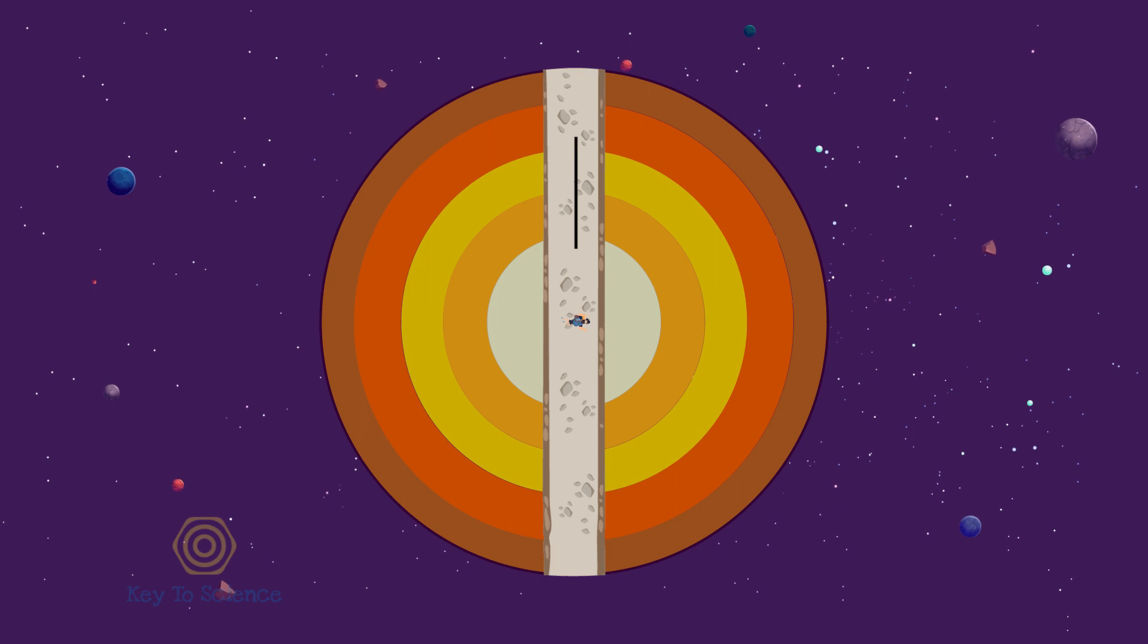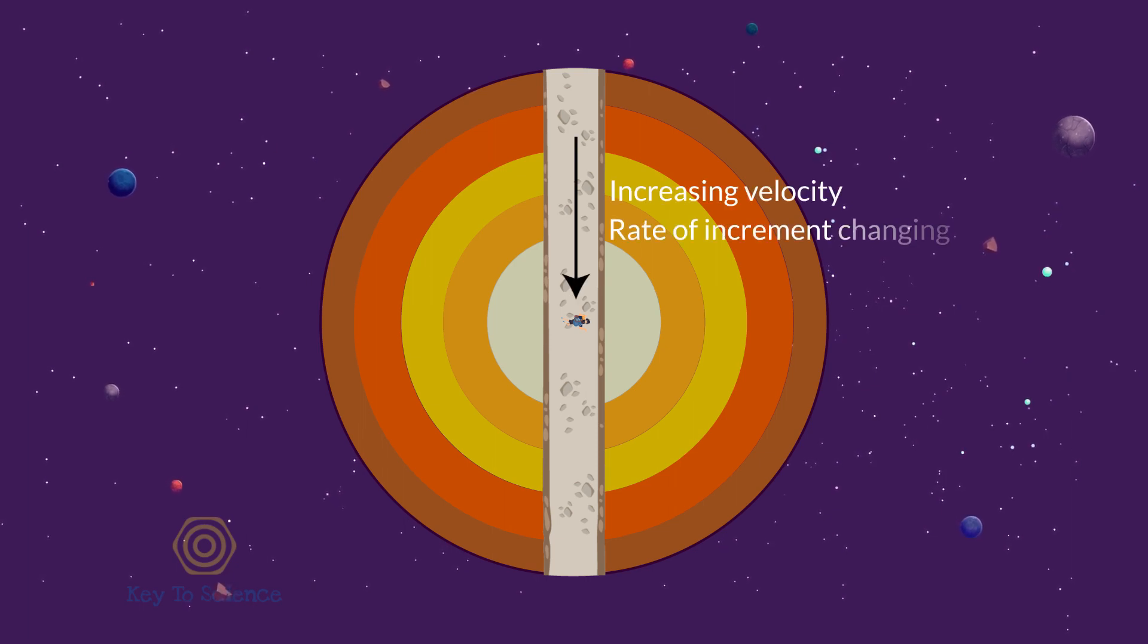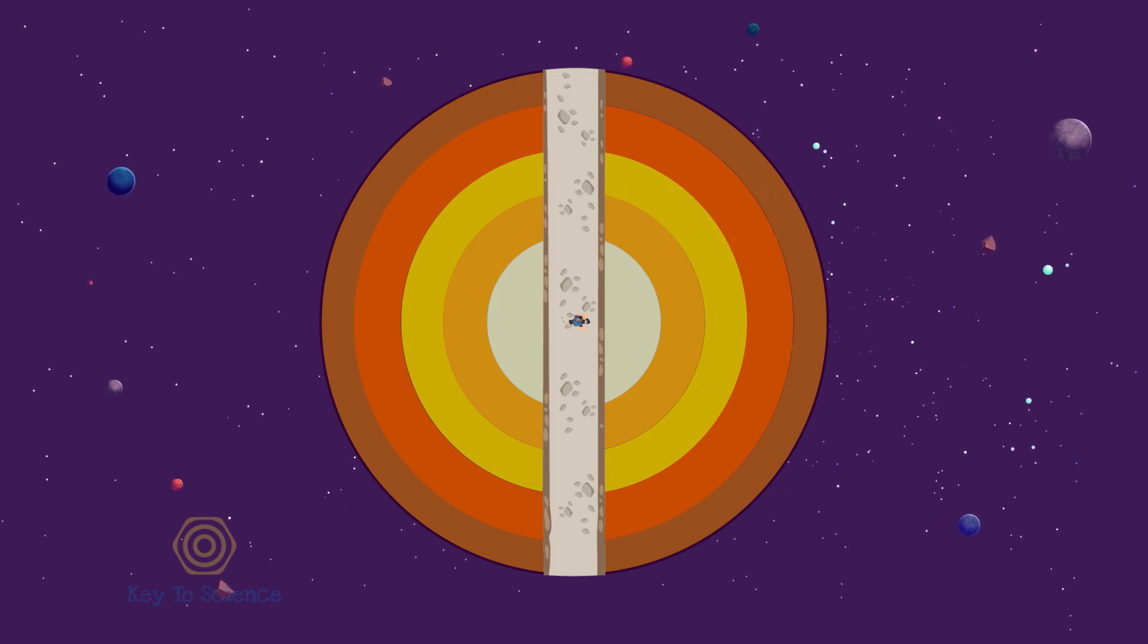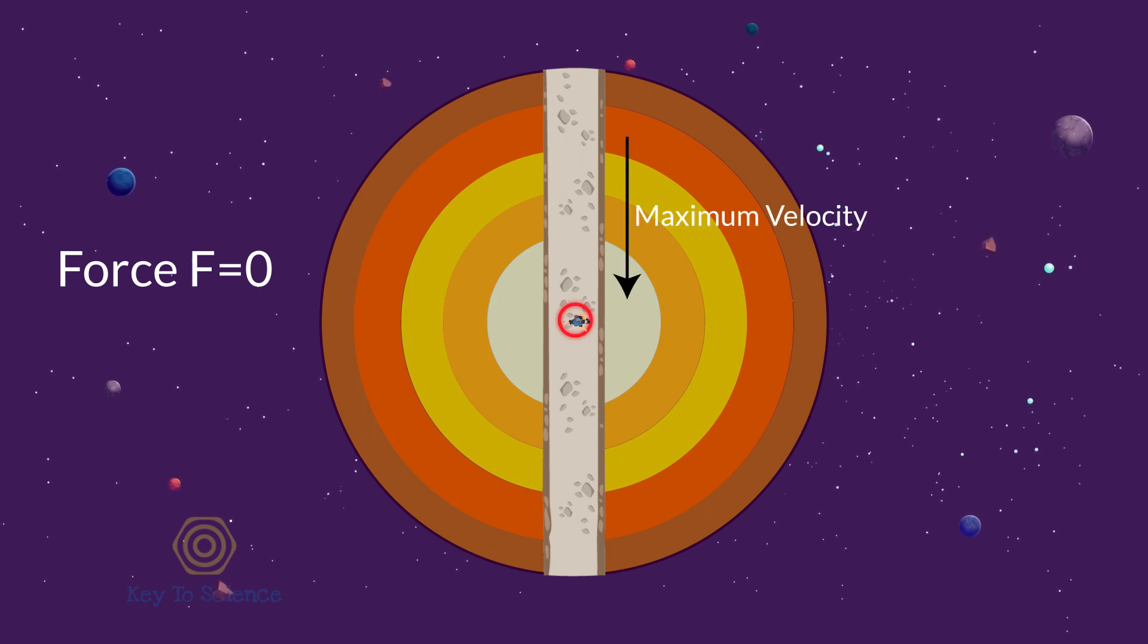We have reached the center with an increasing velocity. Maybe the rate of increment of velocity was decreasing gradually, but the velocity was still increasing continuously. This way, when we'll get to the center, the force on us will be zero, but we'll reach there with a maximum velocity.